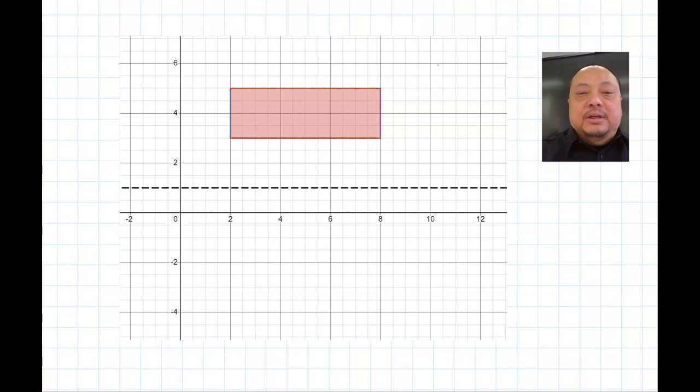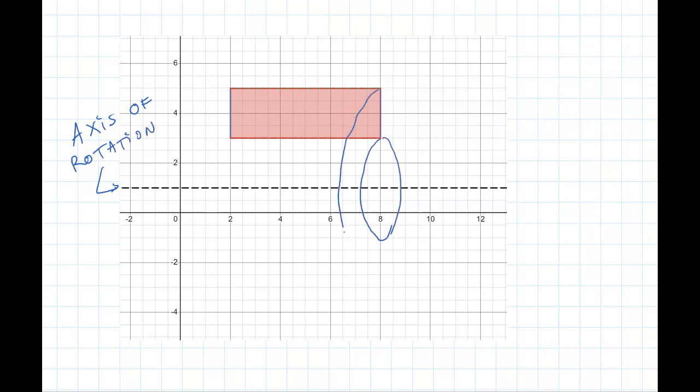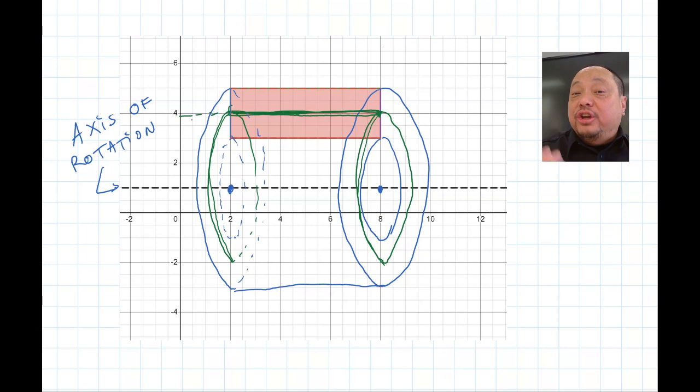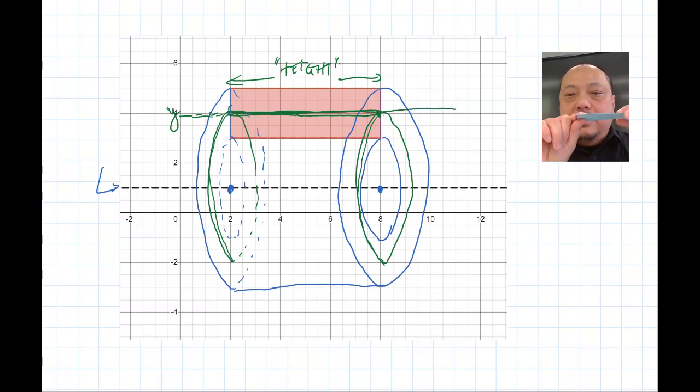Let's go to a graph. Here is the original region in the xy plane. Here is the axis of rotation. I rotate. And I carve out the shells. Note how the shells are parallel to the axis of rotation. What happens? The height of the shell is this distance. The thickness is this dy. The radius is this distance.